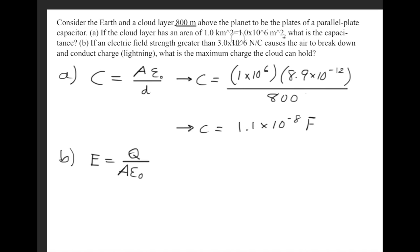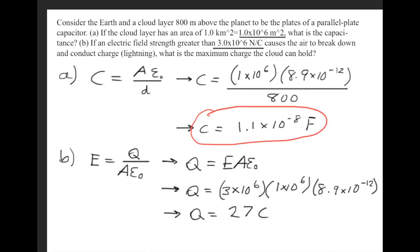Now, here we're already given the E-field and we already know the area. So we'll just go ahead and solve for Q. So Q is equal to E times A times epsilon-naught. And we get 27 Coulombs.